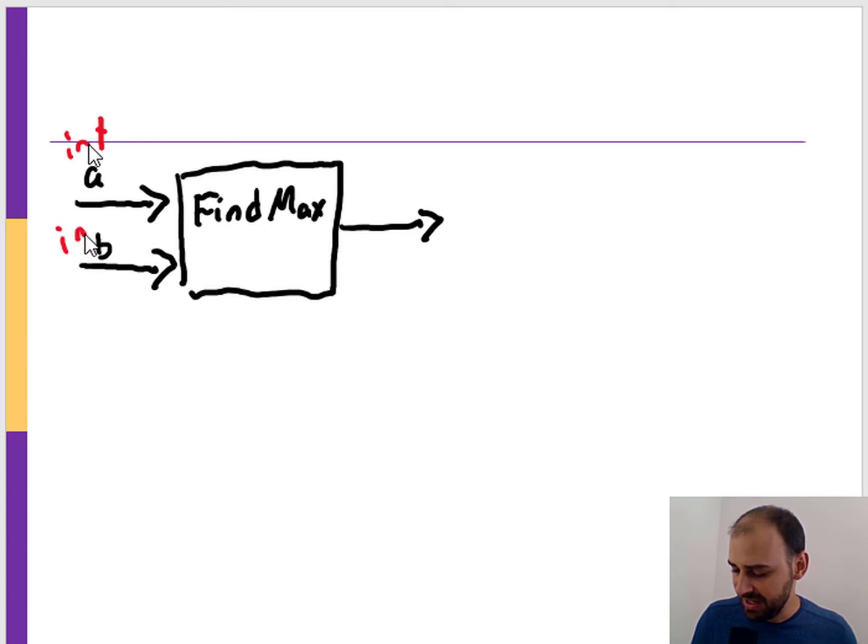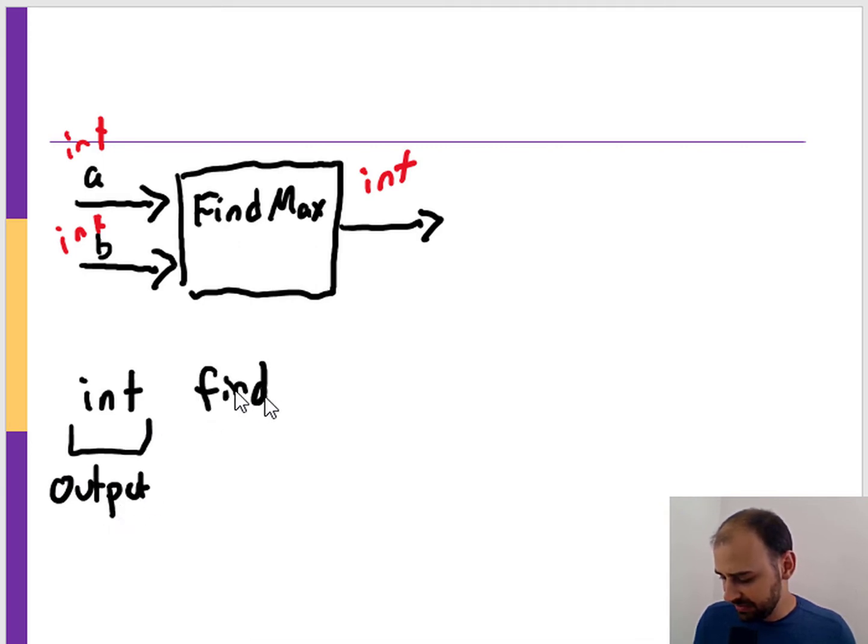Now that allows us to define our function header, where we have an output as an integer. We're going to call the function findMax, and we're going to have our two inputs. I'm going to call them a and b - call them whatever you want.